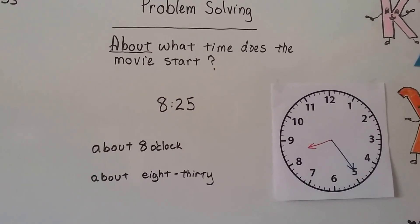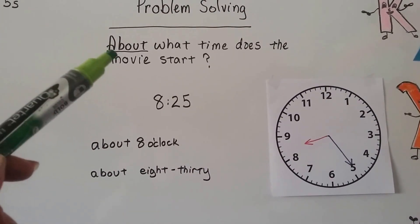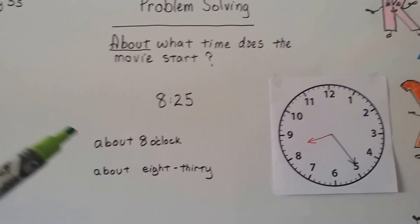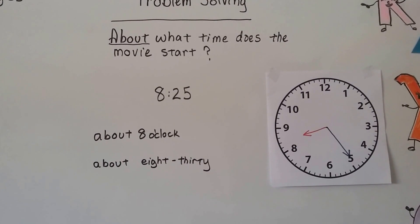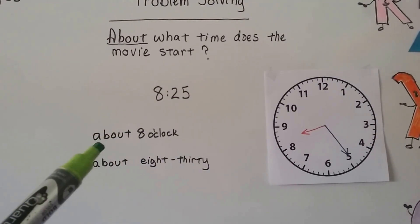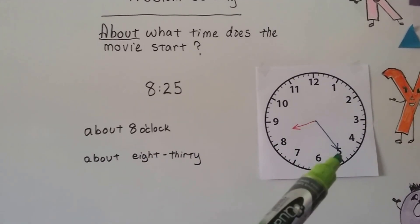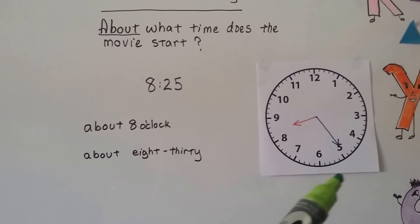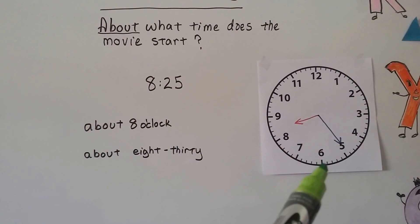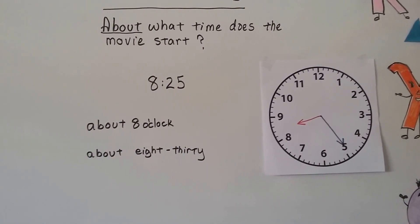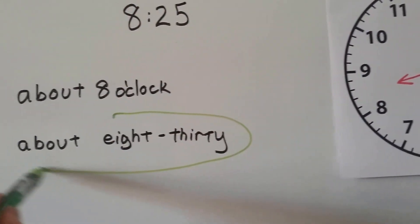Let's try some problem solving. What time does the movie start? We need to find out about what time it starts — does it start at about eight o'clock or about 8:30? If the movie starts at 8:25, is that closer to eight o'clock or 8:30? The minute hand is on the five — that's not close to the 12, which would be o'clock. It's very close to the six, so if you said 8:30, you're right — it's a lot closer to 8:30 than to eight o'clock.